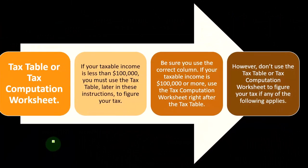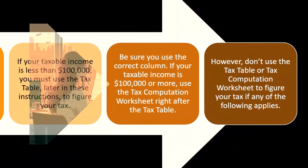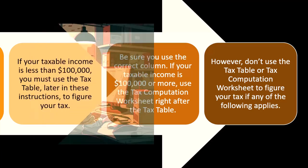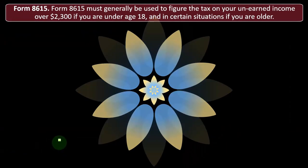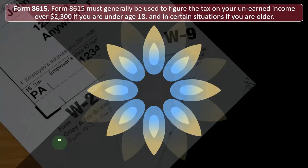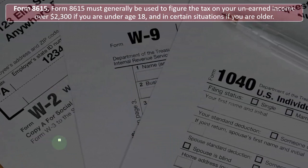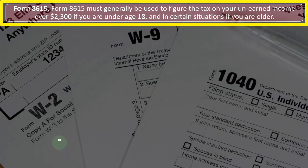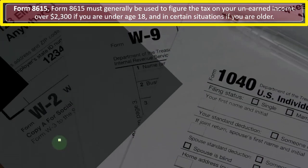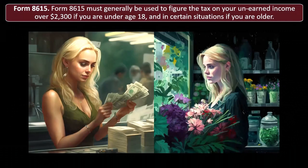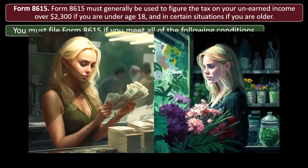However, don't use the tax table or tax computation worksheet to figure your tax if any of the following applies. Form 8615 must generally be used to figure the tax on unearned income over $2,300 if you are under age 18, and in certain situations if you are older.